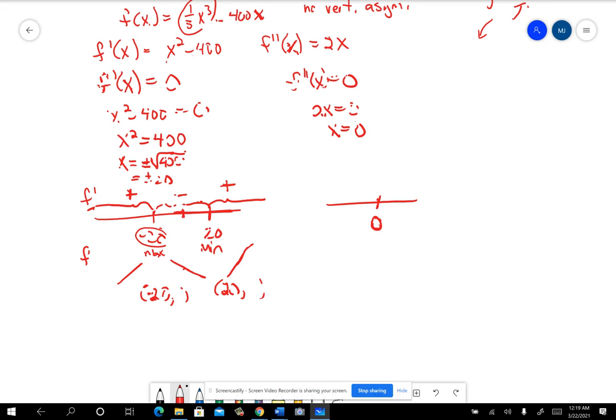Let's grab my phone. Alright, so let's see. When we plug in the negative 20, we wind up getting 5,333 and a third. When we plug in positive 20, we get a negative 5,333 and a third.